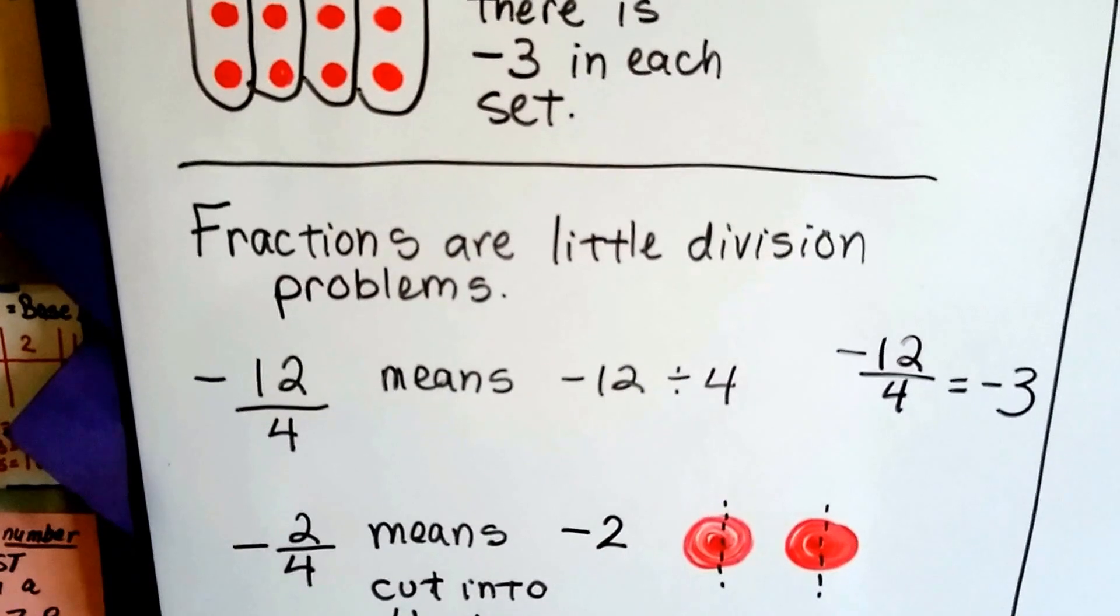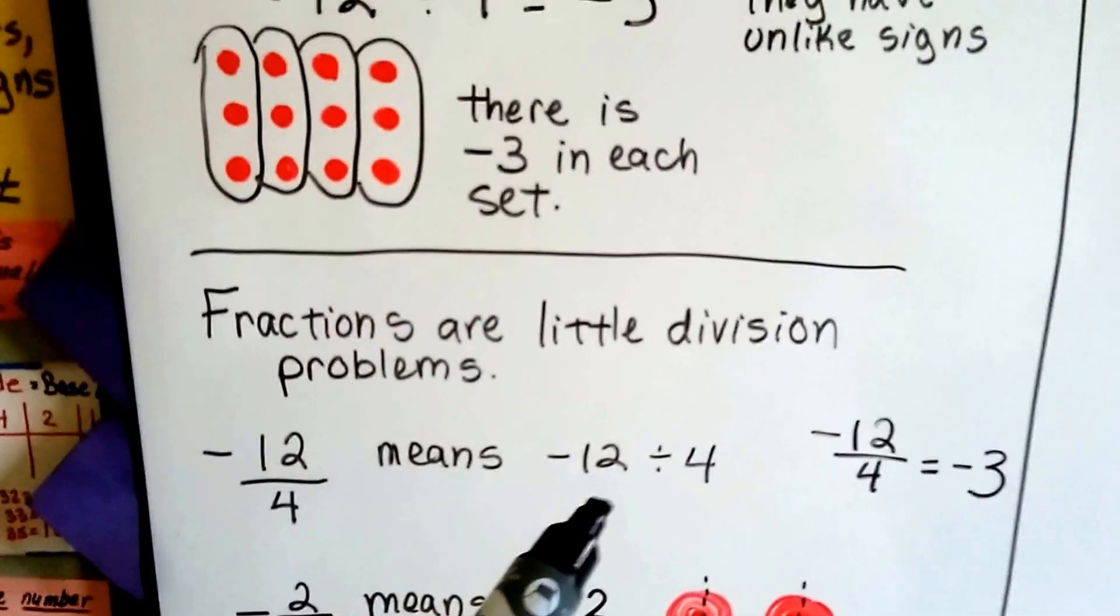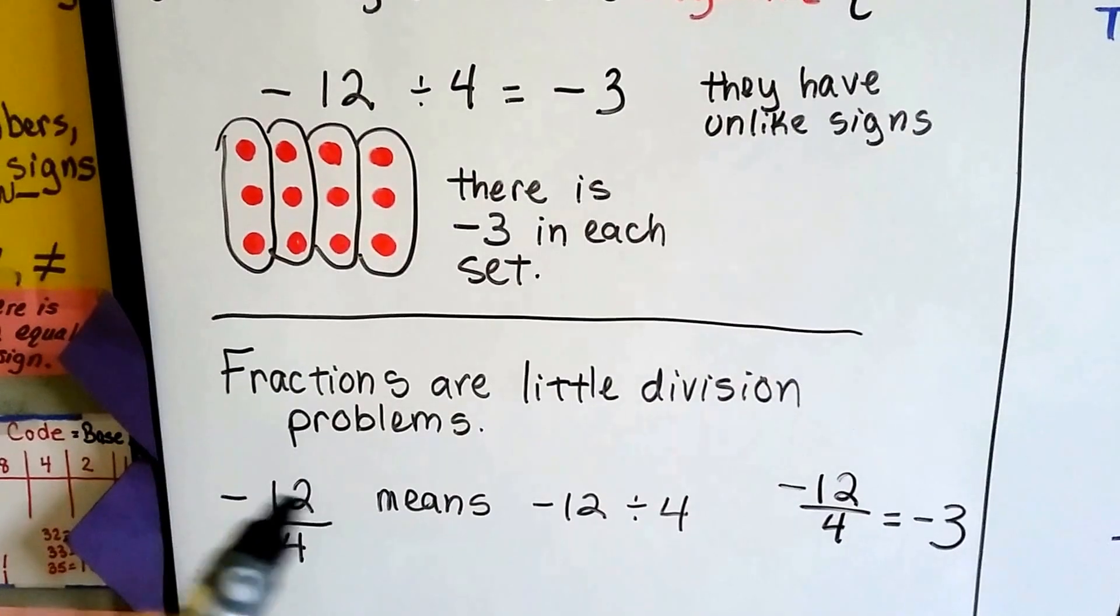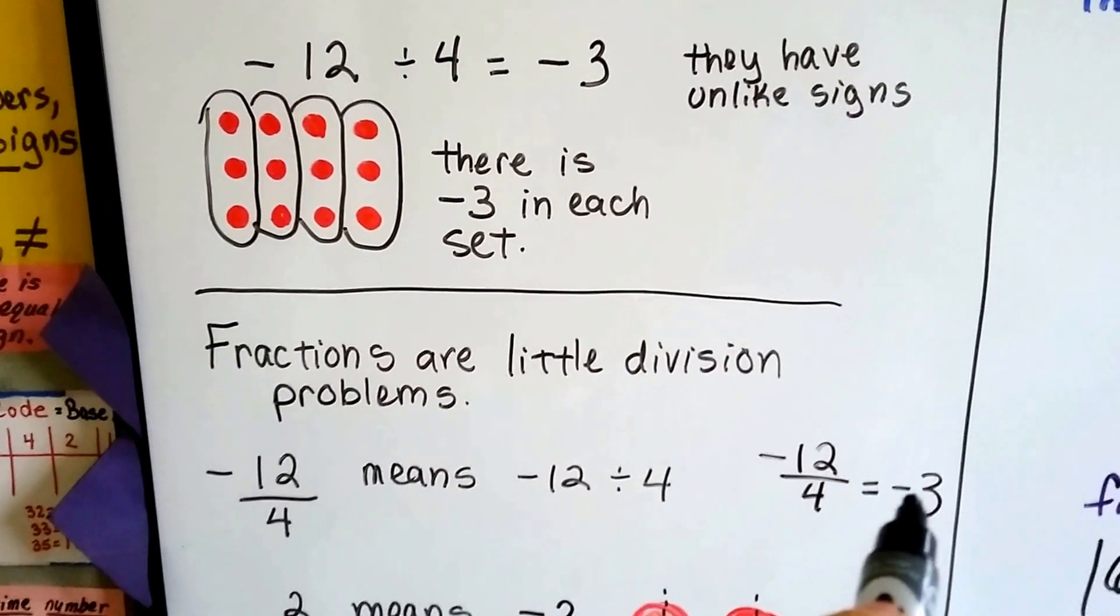Well, fractions are little division problems. Negative 12 divided by 4 is the same thing as negative 12 divided by 4. See? Negative 12 fourths is the same thing as negative 12 divided by 4, and it's going to be a negative 3.